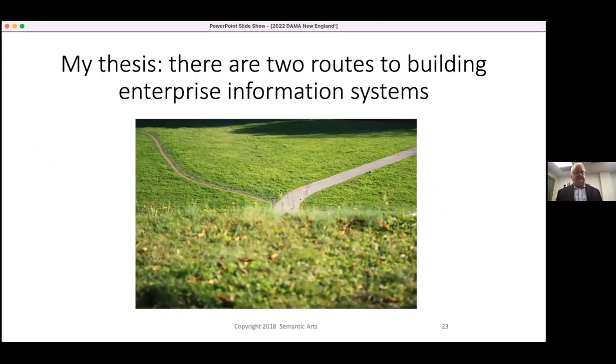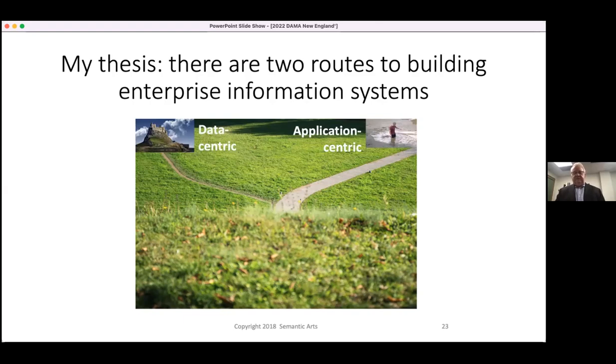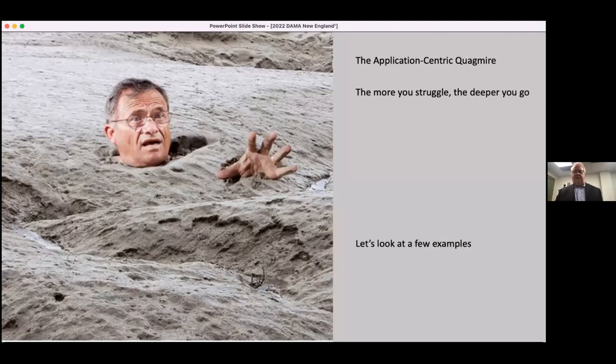My thesis is there's two roads here. There's the road, the well-traveled road to the right and the road less traveled off there to the left. This road, the default path that everybody gets on, we call it the application-centric quagmire and the castle on the hill data-centric. When you're in the quagmire, the more you struggle, the deeper you go. Every project is work and it's hard, but let's make this a little bit more specific. There's some incredibly classic over-the-top examples, but also some more mundane ones, but we see this every place we go.